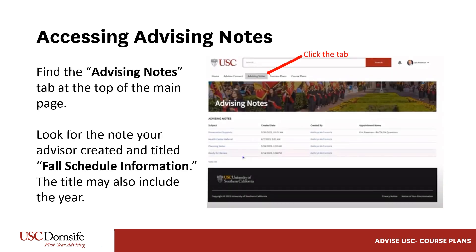An important document that accompanies the course plan is the advising note. You may access all advising notes in another tab at the top of your Advise USC home page. For now, you'll want to find the note titled Fall Schedule Information. The title may also include the year.